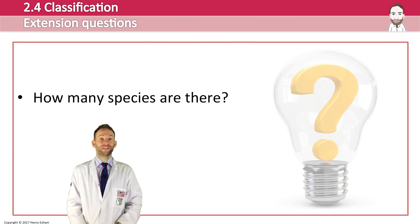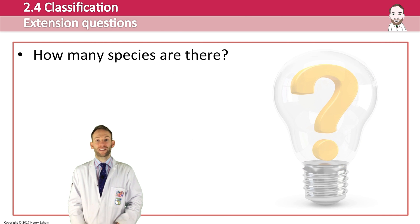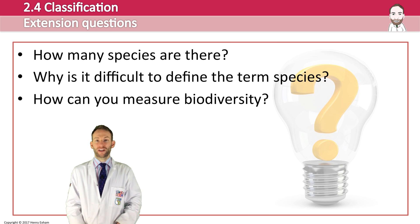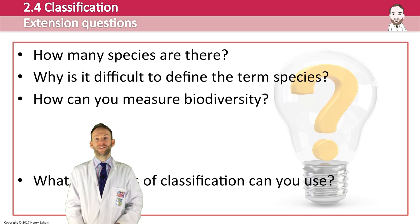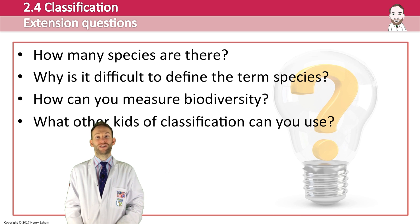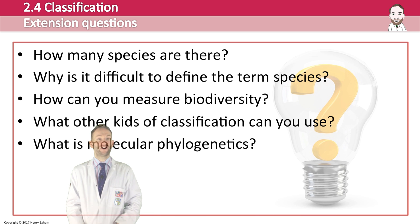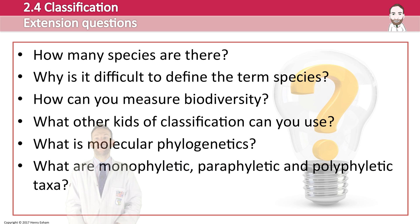Extension questions to consider: How many species are there, and what is the evidence? Why is it difficult to define the term 'species'? How can you measure biodiversity? What kinds of classification systems can you use? What is molecular phylogenetics? And what are monophyletic, paraphyletic, and polyphyletic taxa?